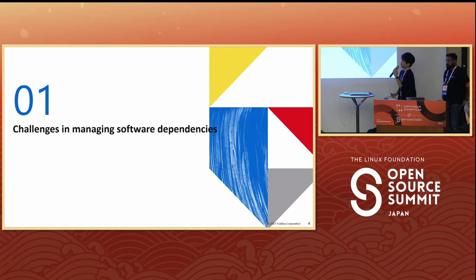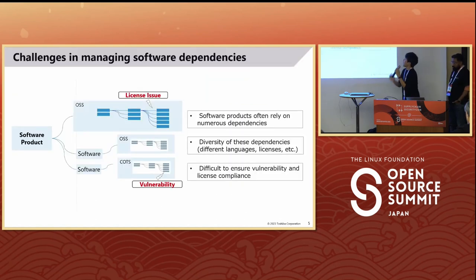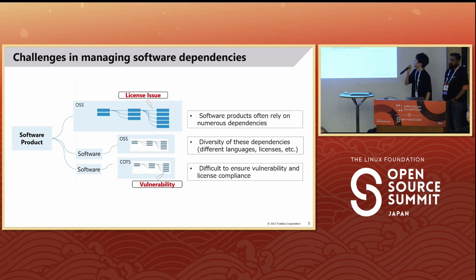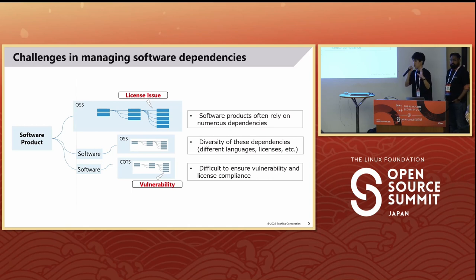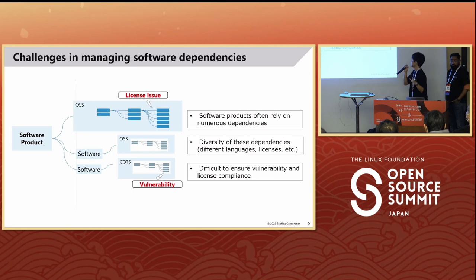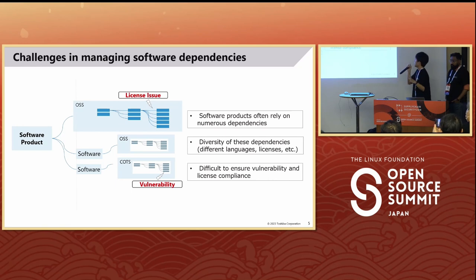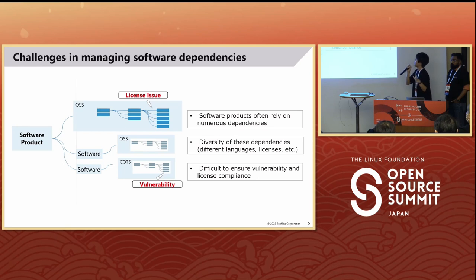First topic: managing software dependencies. If you develop some software, you have problems about dependencies. For example, if you develop a very big software project, you have several issues such as numerous dependencies of very different types — sometimes C language, sometimes completely different languages. It is difficult to manage on your own. And of course, if you develop a big software product, you need to check every vulnerability or license issue.